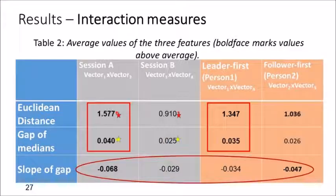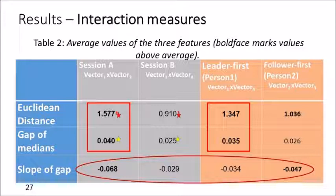On average, the highest distance and gap of medians are in session A and for person 1 — the one who started as a leader. The difference between speakers in filled pauses used in session A is significantly larger than in session B. Person 1, leader first, tends to change their behavior more than person 2, followers first. All slopes of gaps are very moderate, and all averages of the slope of gap are negative, indicating that speakers are getting closer. The highest absolute slope of gap — indicating speakers getting closer faster — is in session A and for speaker 2.